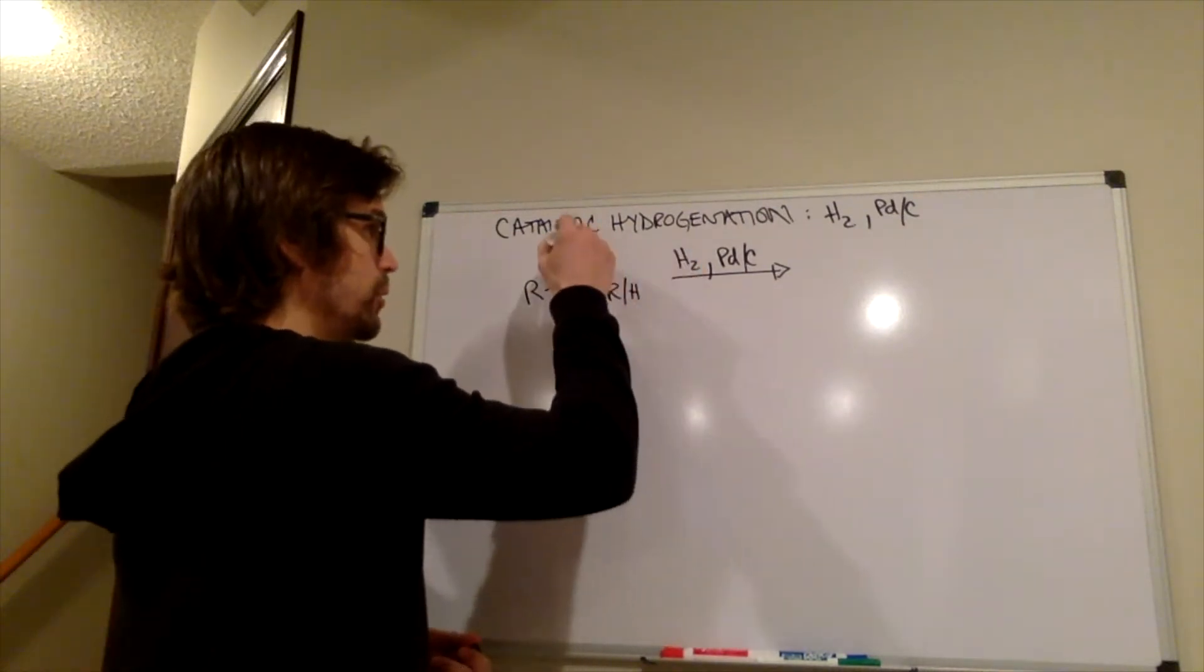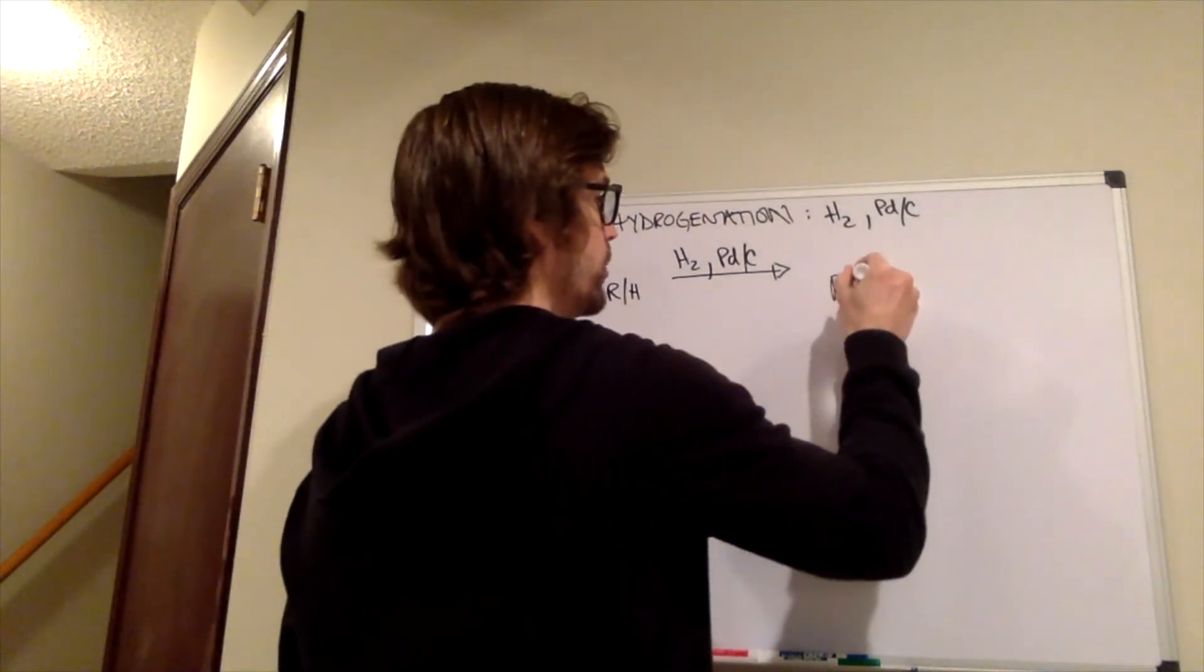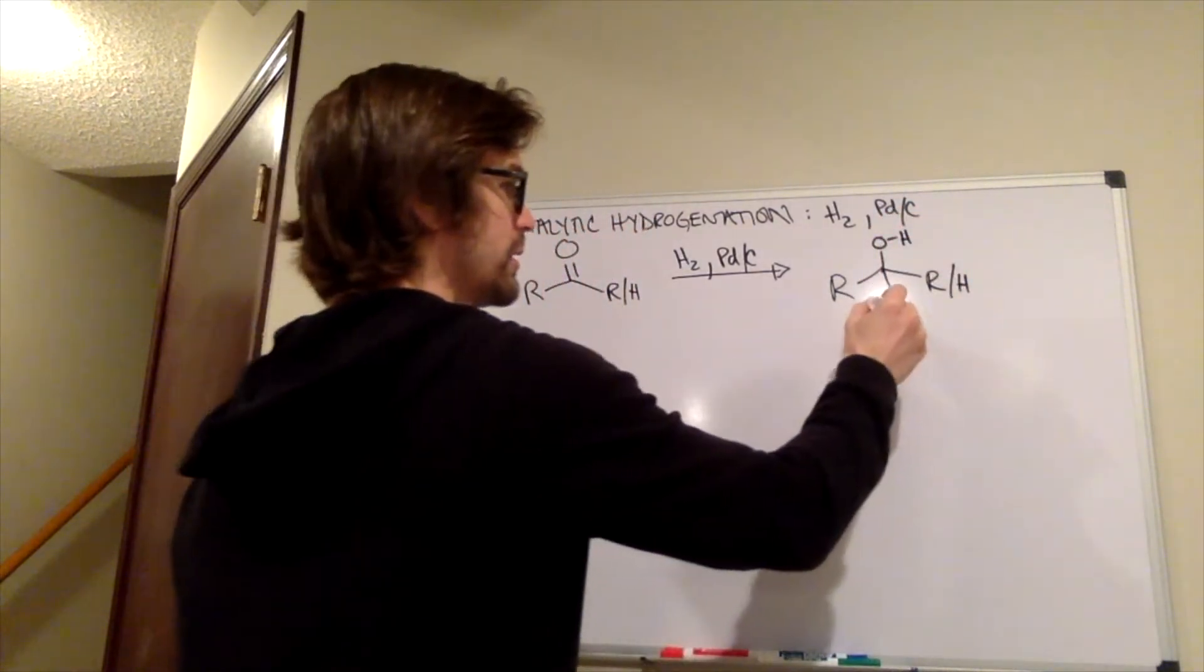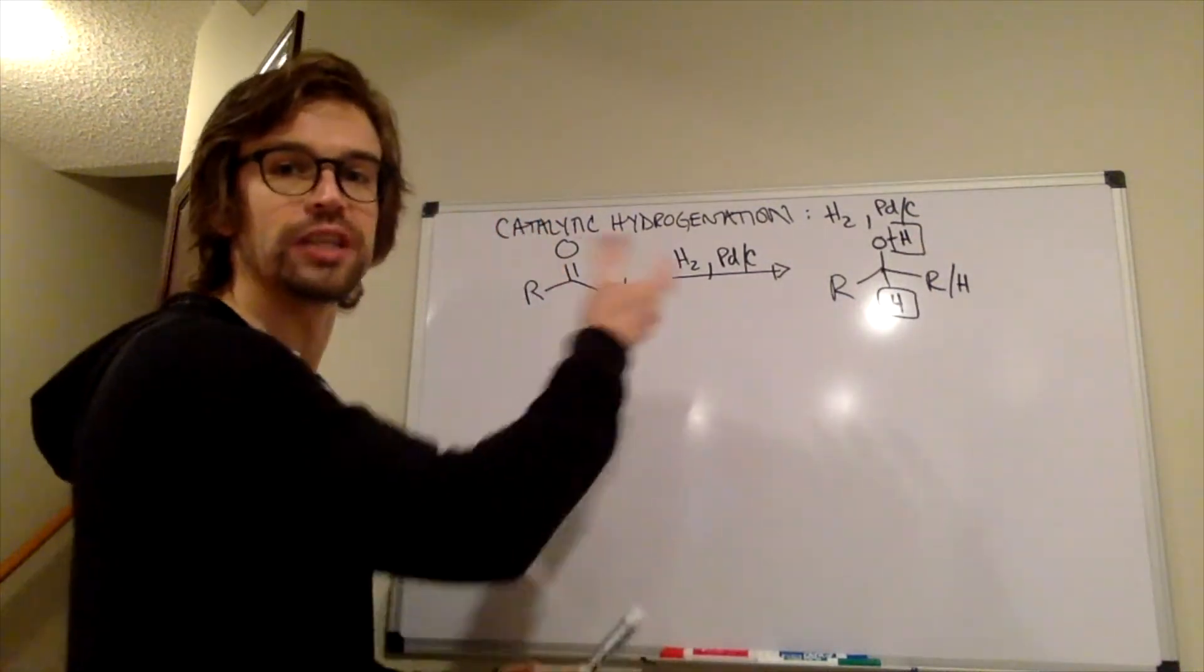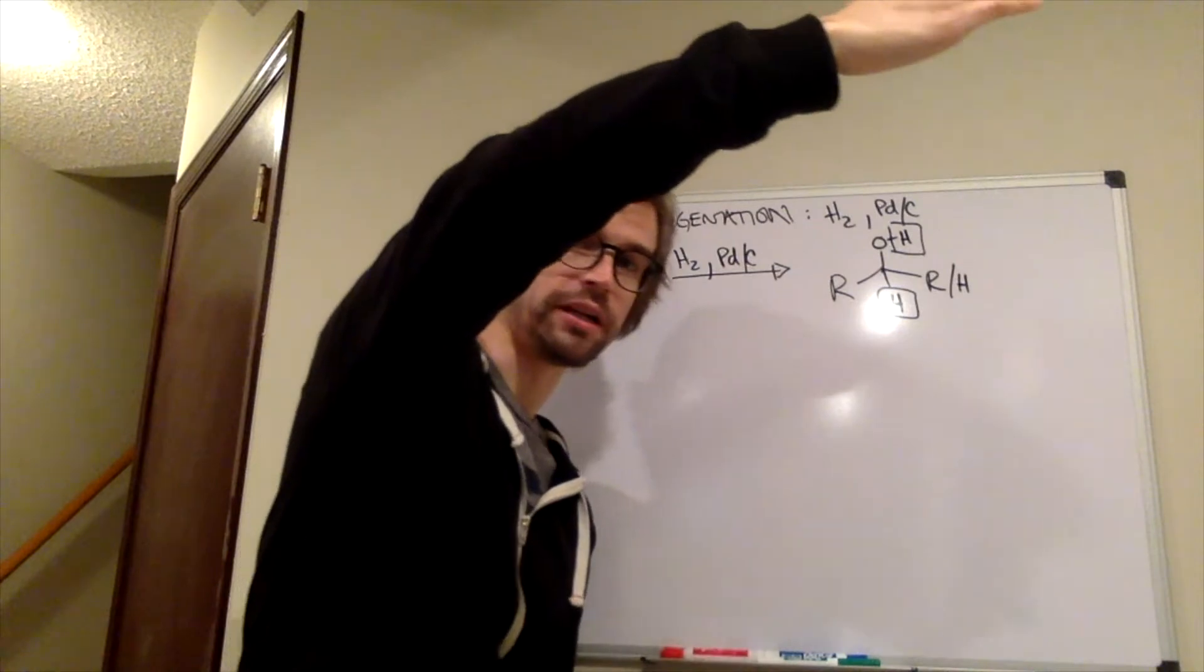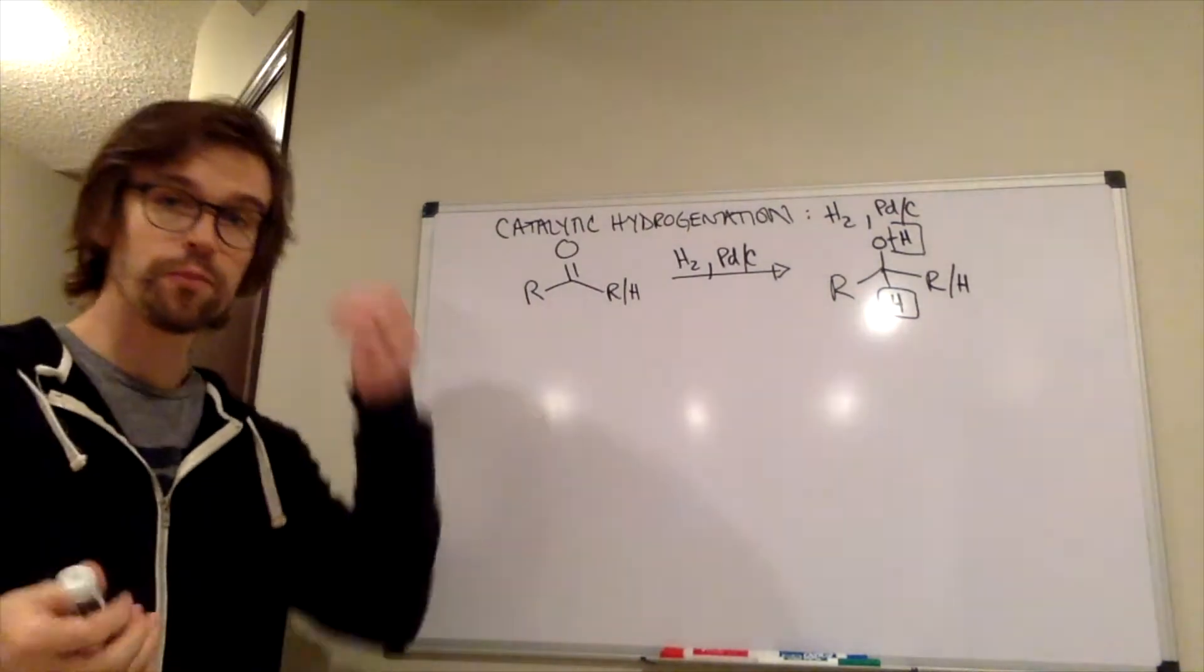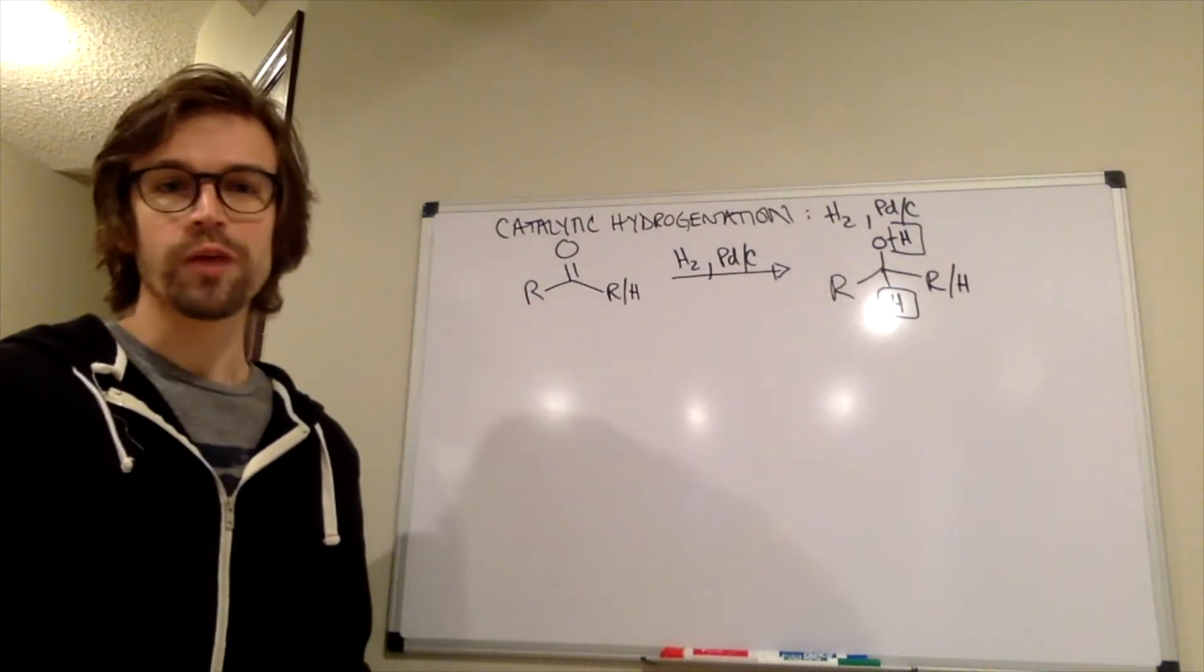So H2 essentially will get added across this pi bond, and that would reduce the molecule to the alcohol. So this hydrogen and this hydrogen would come from the hydrogen gas. So what's the deal here? This is our third way of doing this.